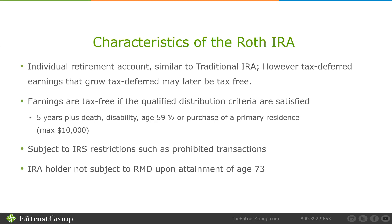How do you distribute earnings tax-free from a Roth? You must satisfy two sets of criteria. Number one, you must have had a Roth for five years. The moment you contribute to a Roth, the clock for that five years starts for all of your Roths for the rest of your life. Once you satisfy that five-year clock, you will not have to satisfy it ever again. When you make a contribution to a Roth at any time during the year, the clock starts as of January 1st of the year for which the contribution was made.